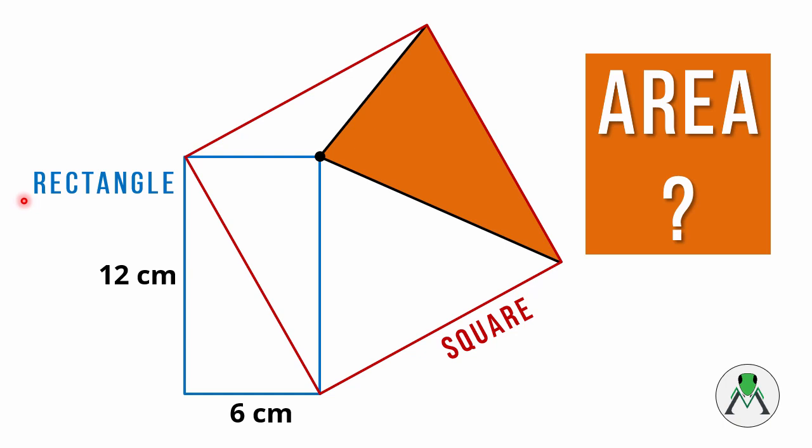Hello everyone, welcome back to my channel Mathematics. Let us discuss this interesting geometry problem. We have to find the area of this shaded triangle. There is a rectangle whose sides are given to us and there is a square given to us in this figure.